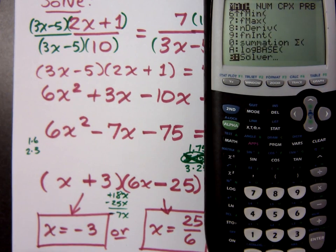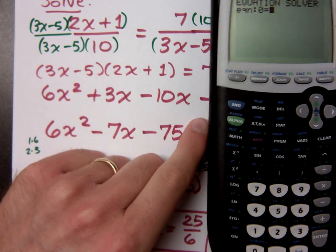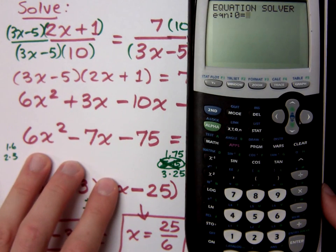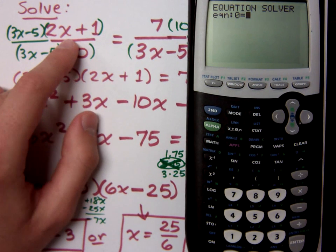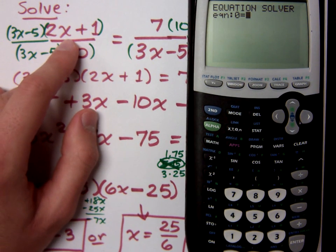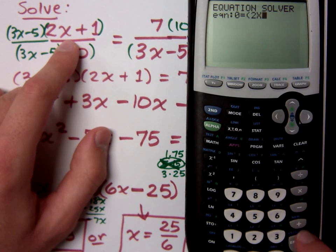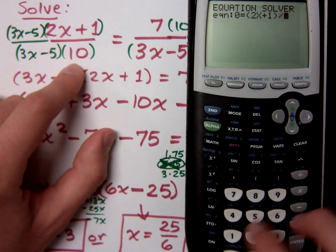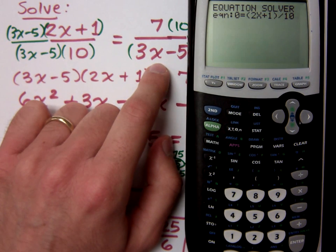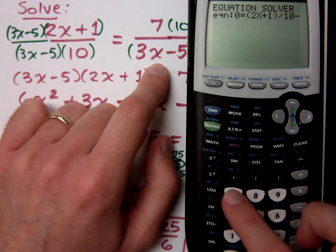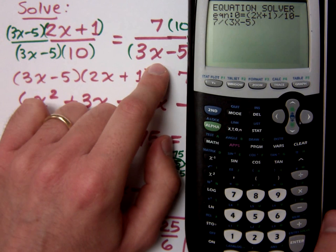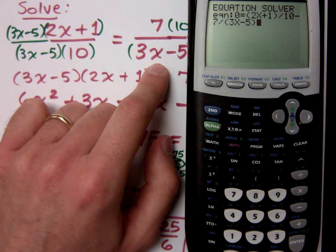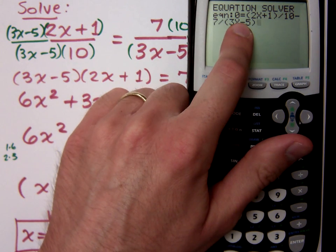So remember the solver is under math. Now typing in this equation, be very careful how you use your equal signs and your parentheses. How do I get to a solver? You press math, then press up, and that's the very last option there. So I have 2x plus 1, that whole quantity, divided by 10. But I need to move this fraction over. So I'm going to subtract 7 divided by 3x minus 5. If you're using the solver, notice how it's set equal to 0, so the equal sign is already spoken for.